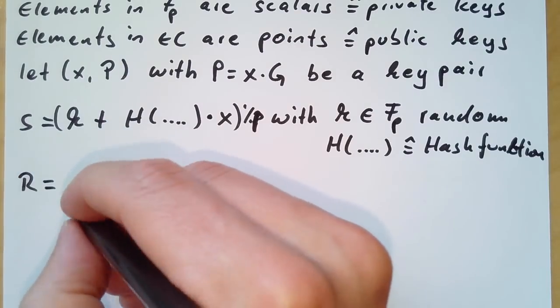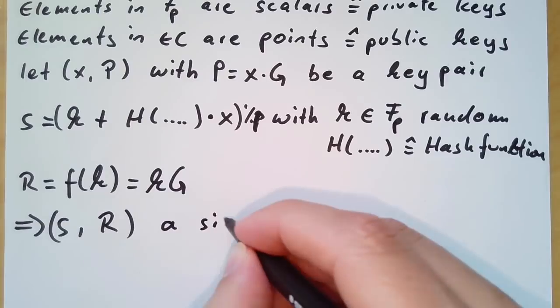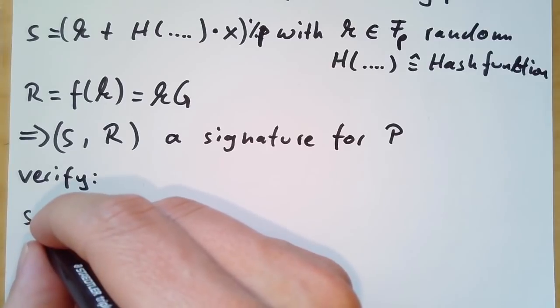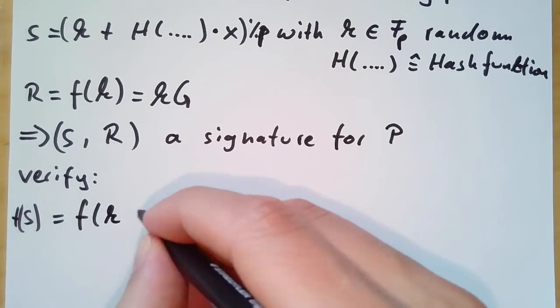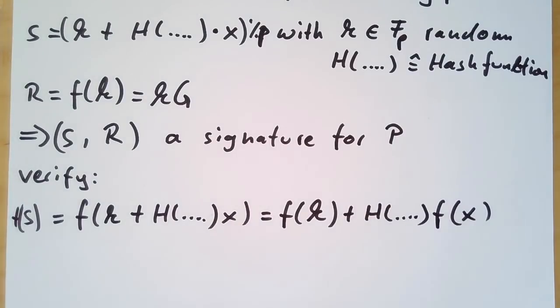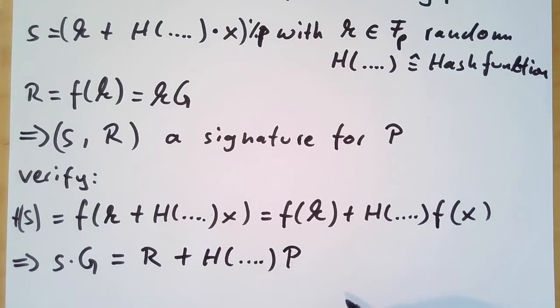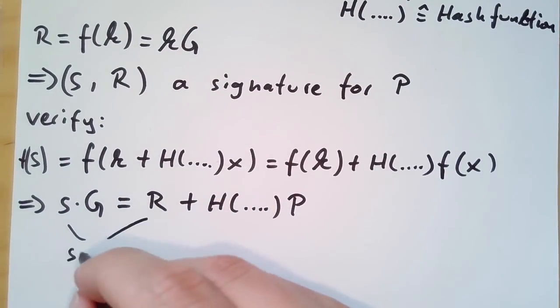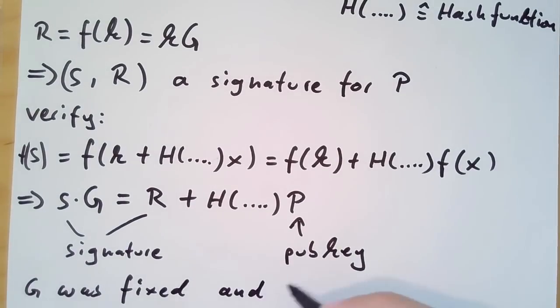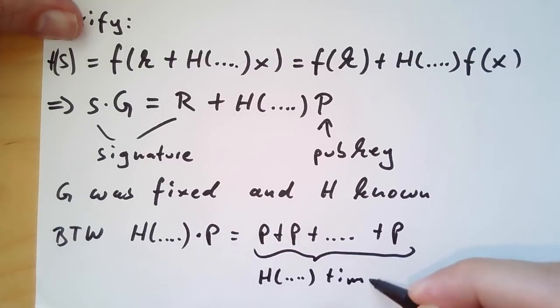Besides our signature equation, we also need the r-value annonce, which is the random k-value times g. Our pair s, r is called our signature for our public key, p. Now we can verify the signature. And what we do is we apply our function f to the signature equation. And since f is in homomorphism, we can just apply f to the single parts of the equation, which means s times g has to be the same as r plus h times p. s and r are the signature values, so they're publicly known. The public key is obviously public known. And g was fixed, and h is known as we can compute the hash of the message. And by the way, when we write h times p, it means p plus p plus p, h many times.